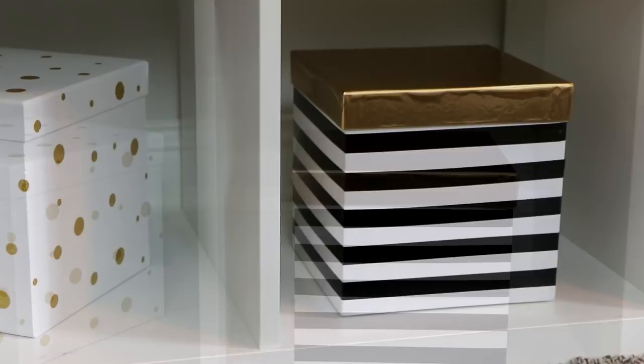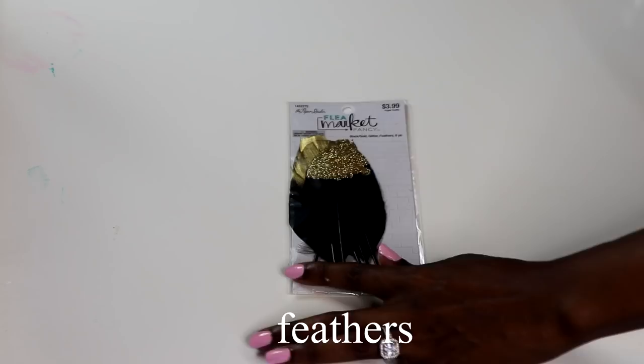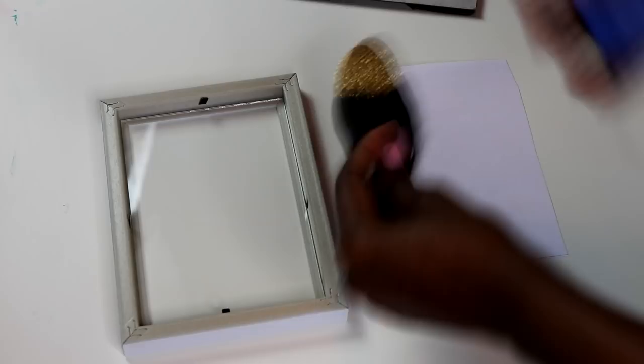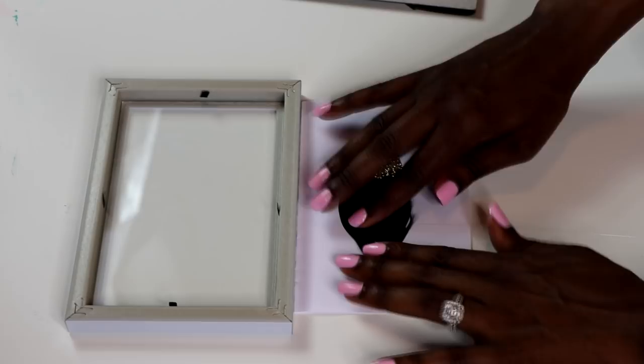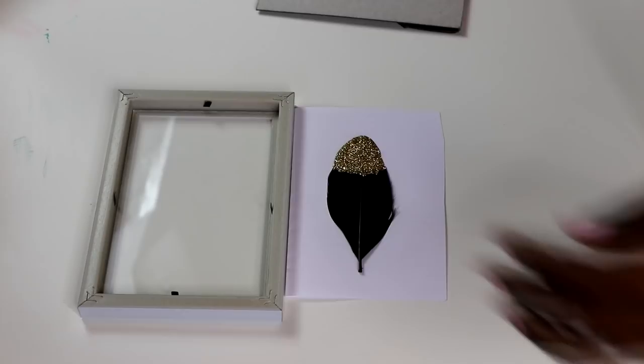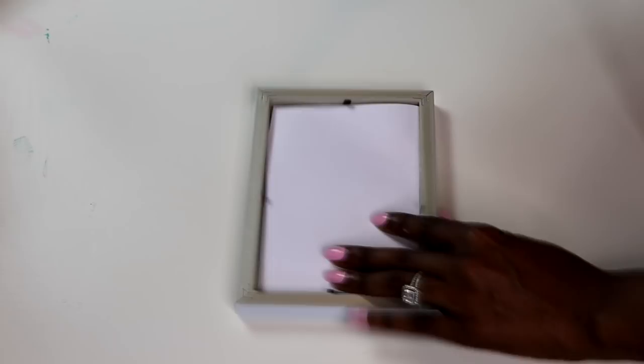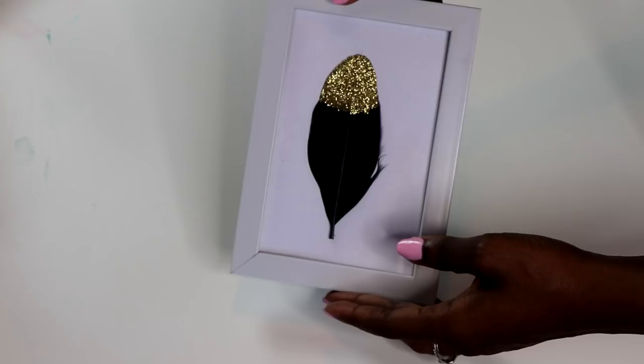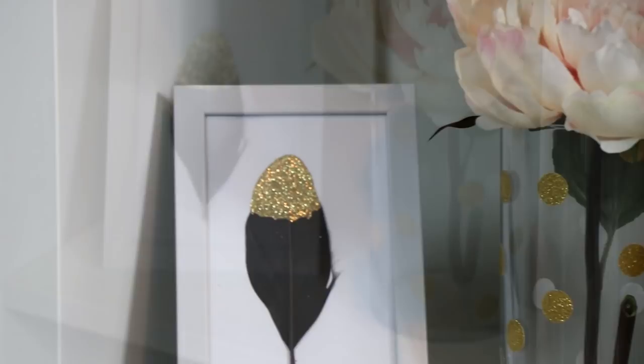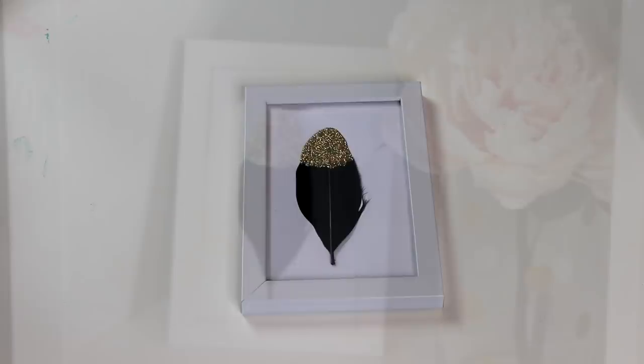For this project, I'm going to use a frame that I picked up from Dollar Tree and these feather wiggle tips that I found in Hobby Lobby. They're so cute. When I saw them, I was like, 'Oh, I'm putting these in a project.' So I'm going to put these in a frame and hot glue them on a white sheet of paper to give it that white background. This is going to be one of the simplest DIY projects ever—it's just a feather in a frame, but it's so cute. I love it. I do this all the time. I have art pieces around my home like this, so I just found it to be a simple project but totally cute.